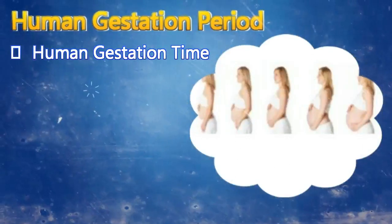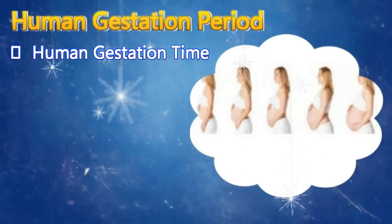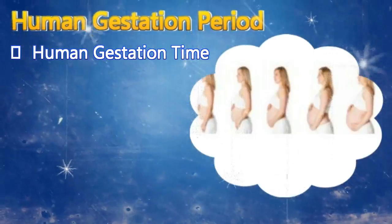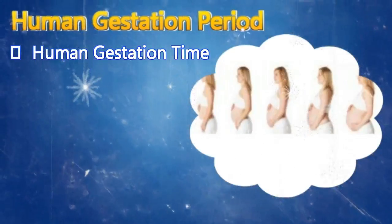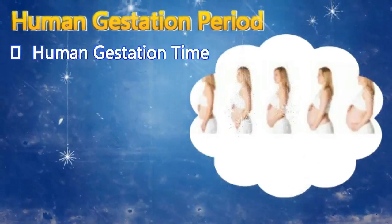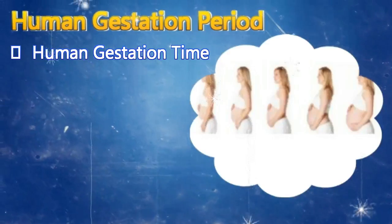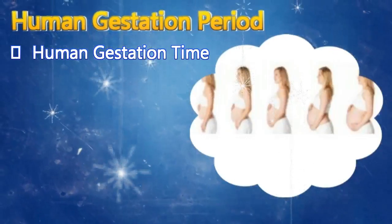The average human gestation length is calculated as 40 weeks because it is measured from the first day of the last menstrual period and not from the date of conception. According to this data, the doctor calculates the due date, also known as the estimated date of confinement. However, there is no guarantee that the woman will deliver the baby on that particular day — childbirth can occur 10 to 14 days before or after. Childbirth occurring anywhere between 37 and 42 weeks is considered normal, whereas a baby born before 37 weeks is called preterm and a baby born after 42 weeks is called post-term.